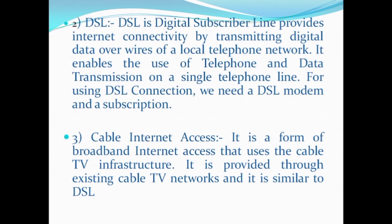The next type is DSL — Digital Subscriber Line. It provides internet connectivity by transmitting digital data over the wires of a local telephone network, enabling use of telephone and data transmission on a single line. For DSL, you need a DSL modem and a subscription channel. The next is cable internet access, a form of broadband internet access that uses the cable TV infrastructure, similar to DSL.